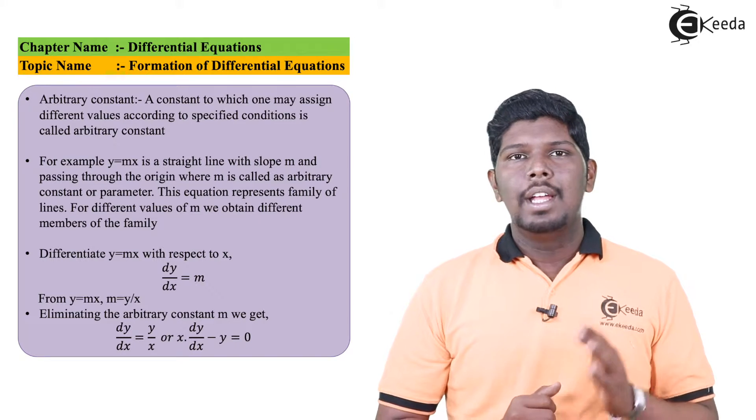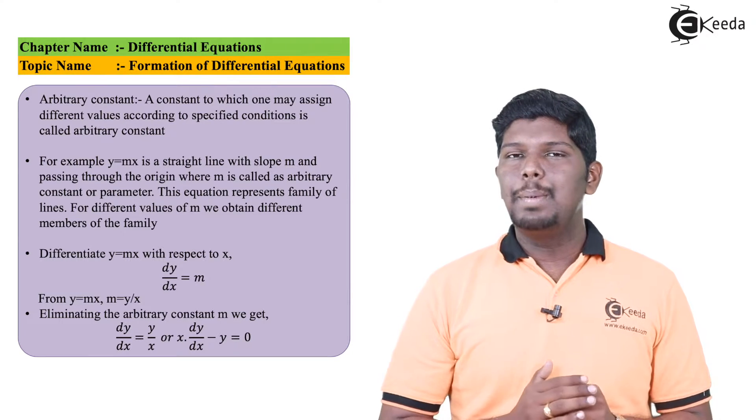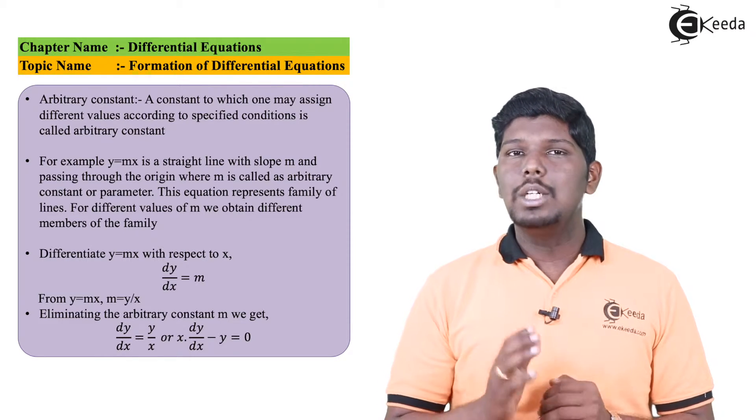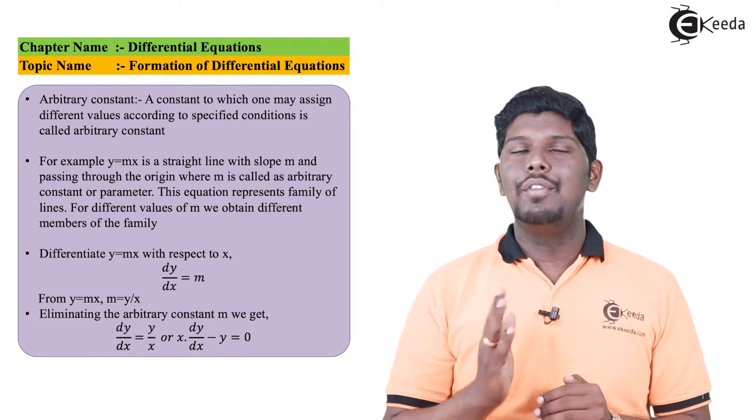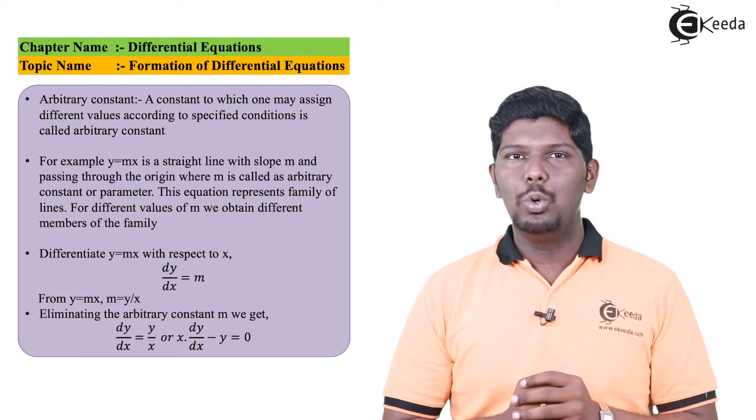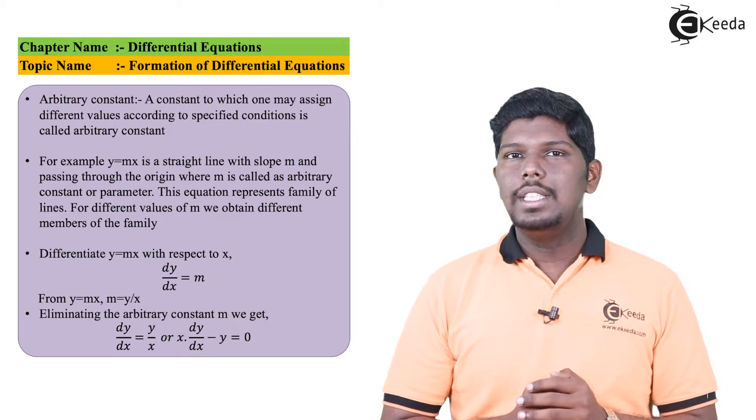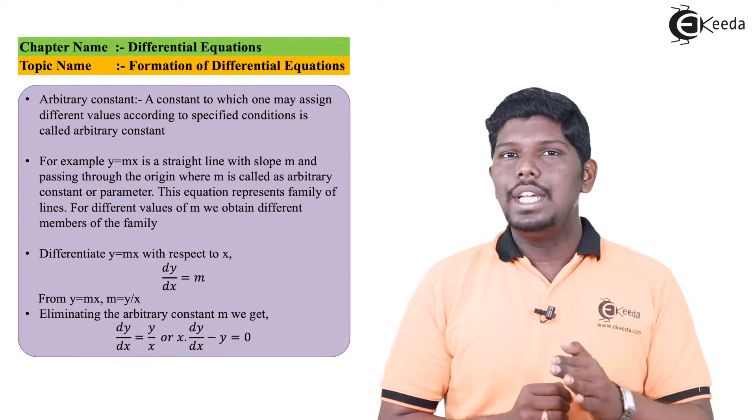Why is it called an arbitrary constant? Let us see. The line y equals mx basically represents a family of lines. Y equals mx is not a single line. If you change the values of m, we will get different types of lines which are passing through the origin.